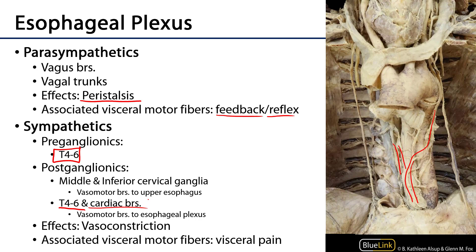Visceral pain is very difficult to localize and it's felt differently than somatic pain. Since these fibers are being conducted along T4 to T6, which also serve the cardiac plexuses, any esophageal pain might be felt as burning or dull pain around the heart — hence the term heartburn when associated with esophageal injury from acid reflux from the stomach.